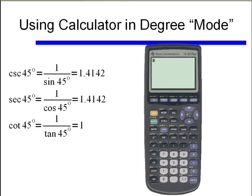So cosecant is equal to 1 over the sine of an angle. Secant and cotangent are found the same way. The secant of 45 degrees is equal to the reciprocal of cosine of 45 degrees. Similarly, for cotangent, we take the tangent of 45 degrees and use the reciprocal button — since tangent of 45 is 1, the reciprocal of 1 is still 1. That's how you use the calculator to find the reciprocal functions: cosecant, secant, and cotangent.